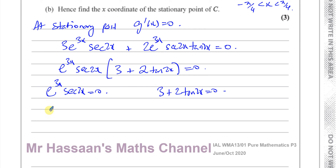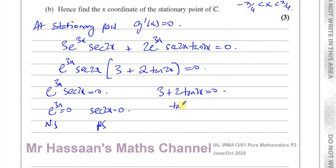This means either e to the power of 3x equals zero, or secant 2x equals zero, or 3 plus 2 tan 2x equals zero. The first gives no solution. Secant 2x equals zero also has no solution, because the secant of any angle is always above 1 or below minus 1. So the only equation that gives us a solution is tan 2x equals minus 3 over 2.